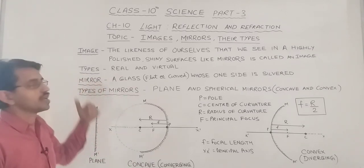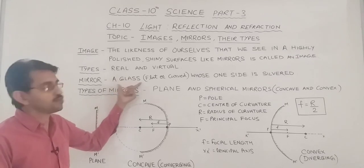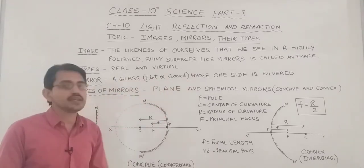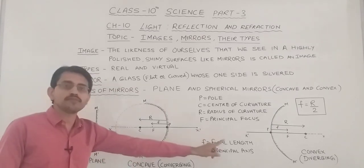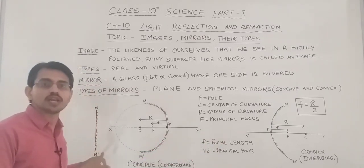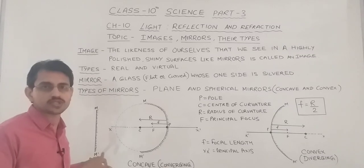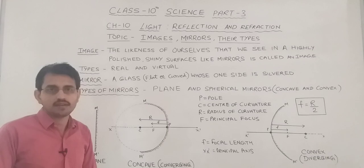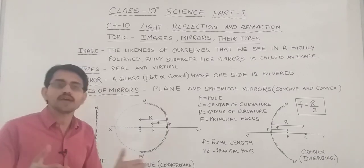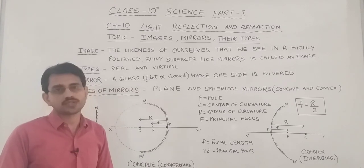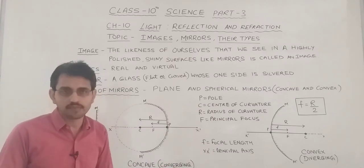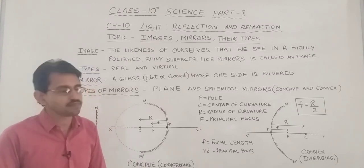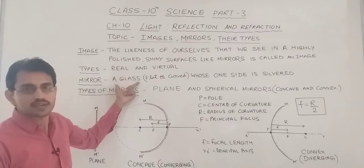A mirror is a glass which may be flat or curved, whose one side is silvered or polished. As you can see, this is a flat glass sheet, and these are curved surfaces — one side is polished or silvered, meaning there is a coat of silver on one side of the glass sheet. The role of a mirror is to reflect light, and it gives regular reflection. Due to regular reflection, we can see our image in the mirror, because only regular reflection can produce an image — diffuse reflection cannot.